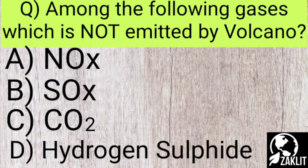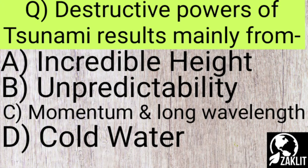The next question is: among the following gases, which is NOT emitted by volcanoes? The correct option is option A — oxides of nitrogen (NOx) are not emitted by volcanoes. However, oxides of sulfur, carbon dioxide (CO2), and hydrogen sulfide (H2S) are emitted from volcanoes. A simple formula to remember: volcano — no NOx.